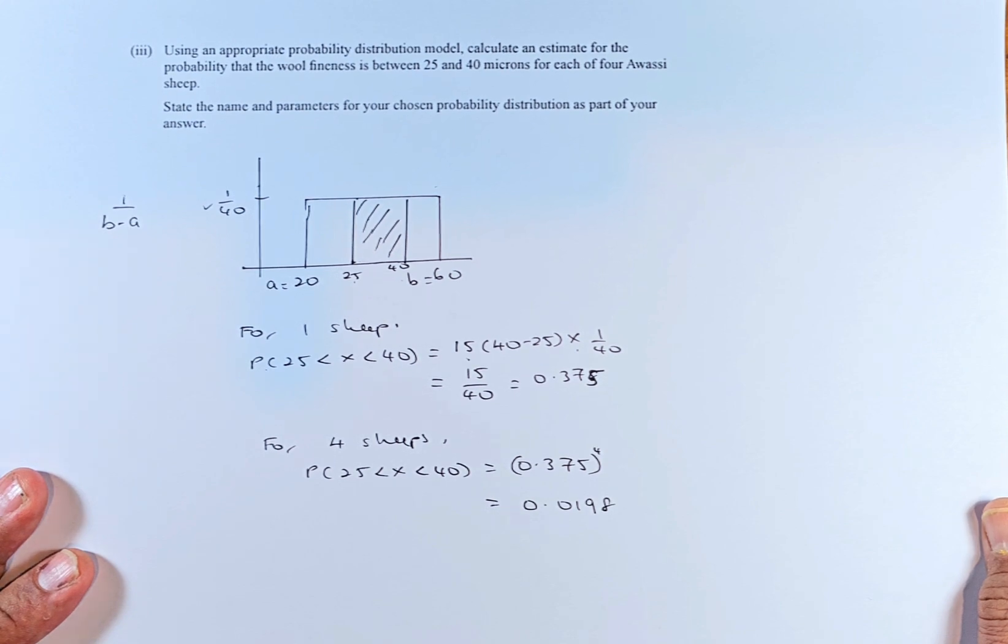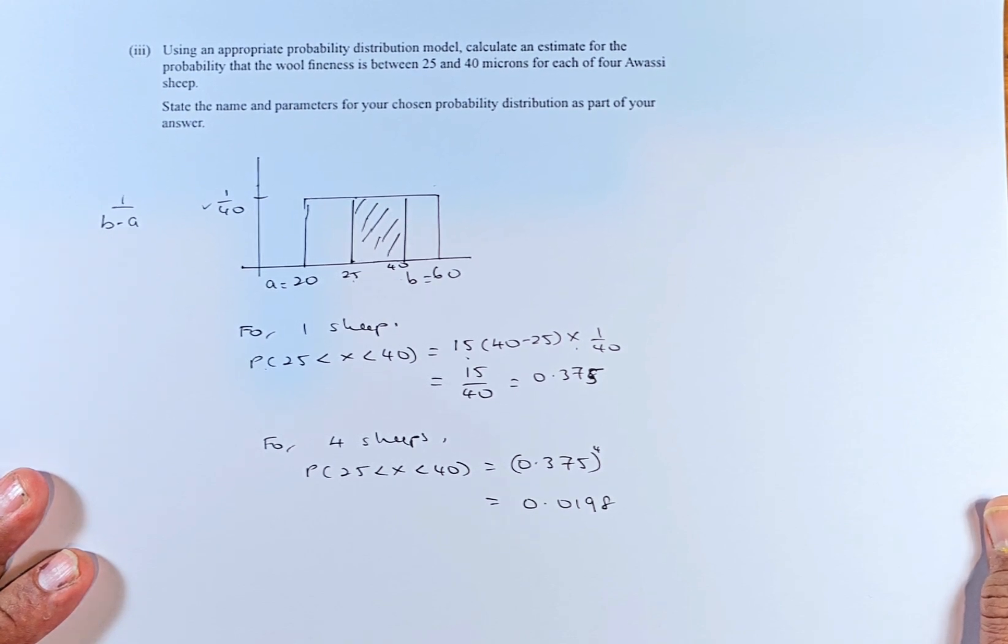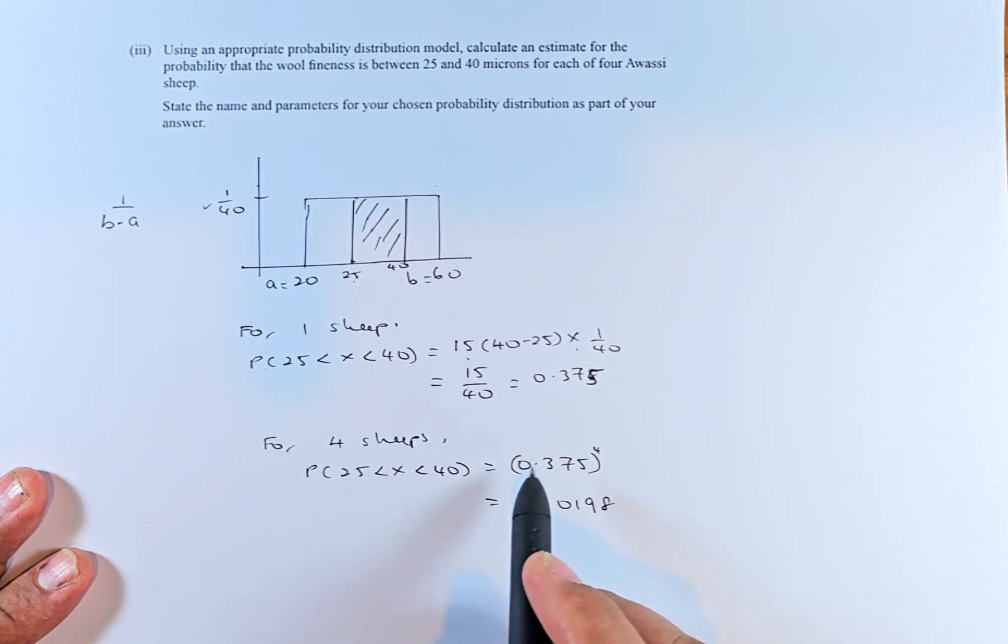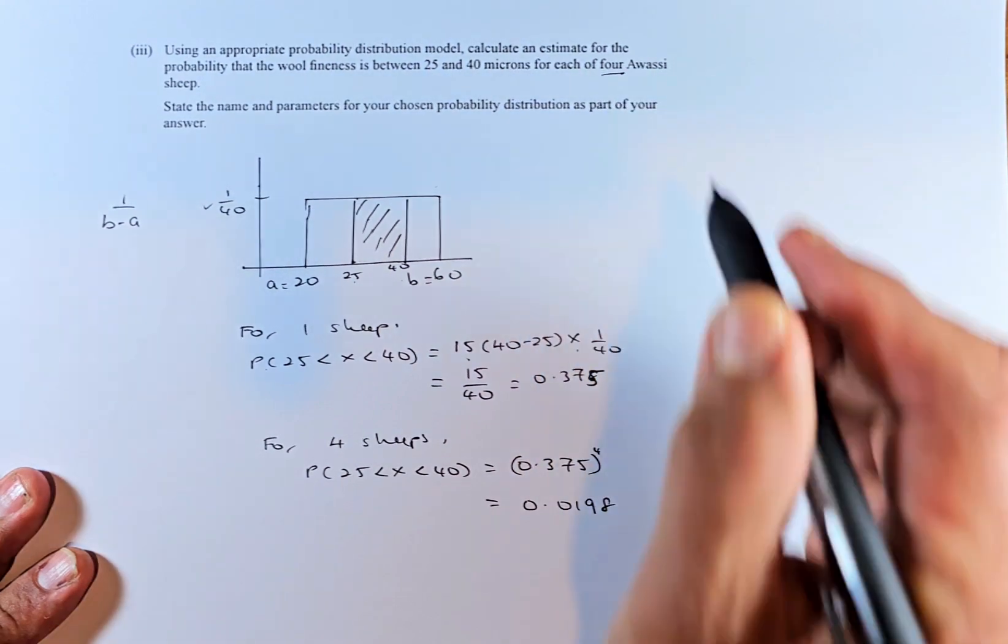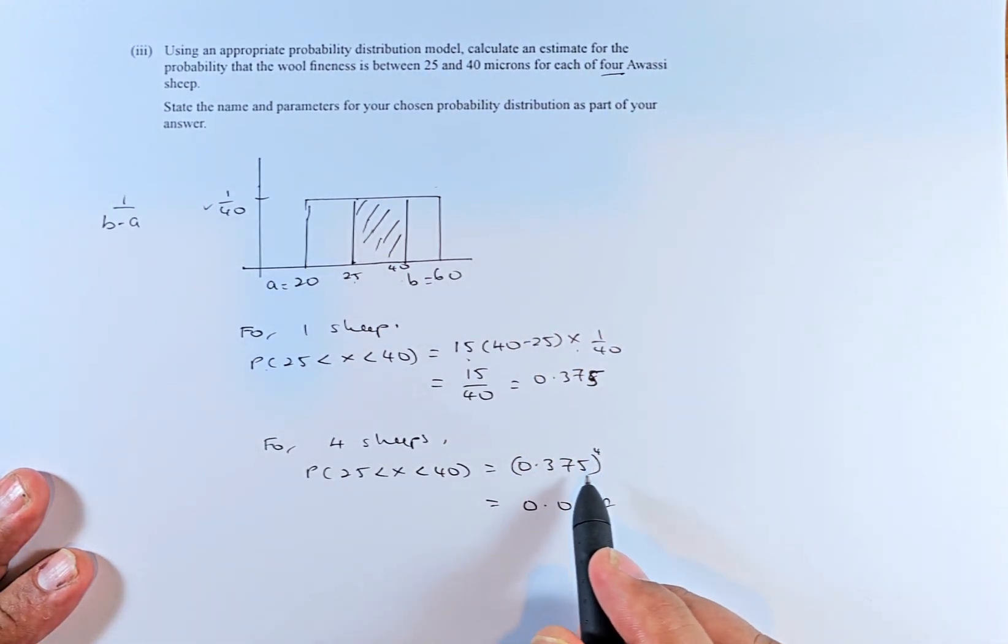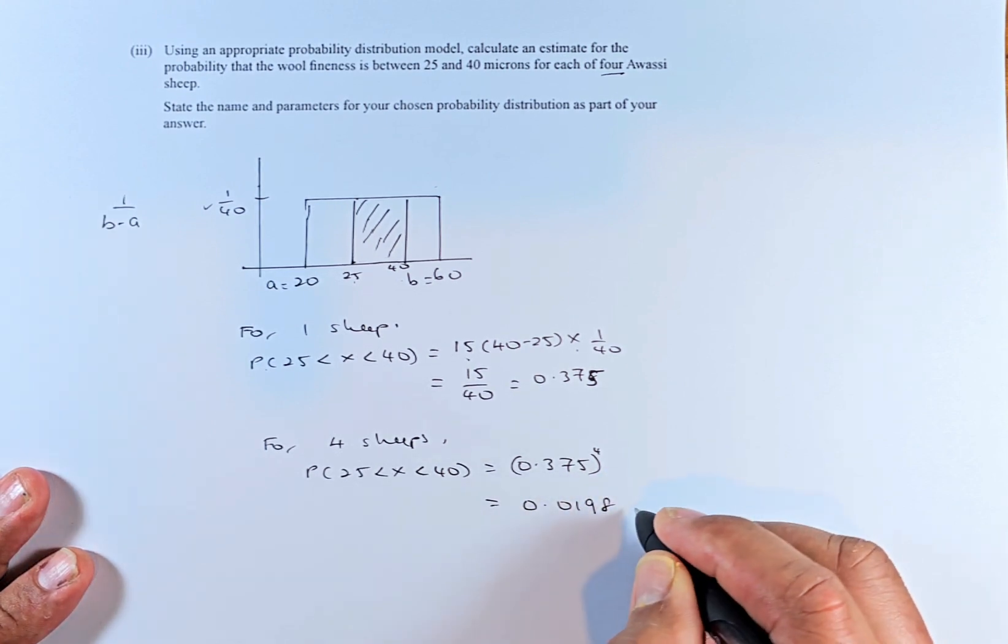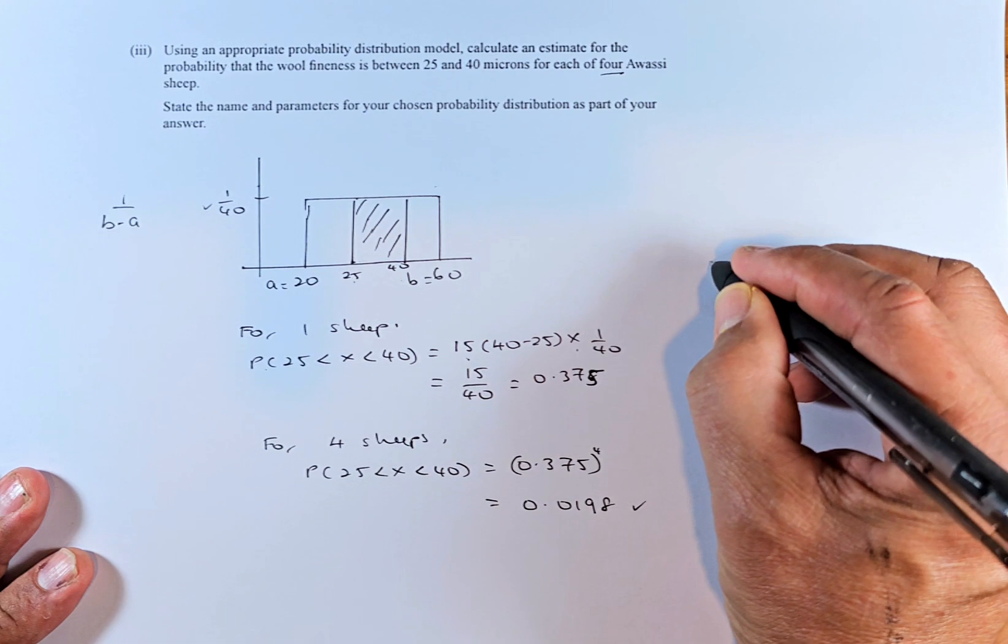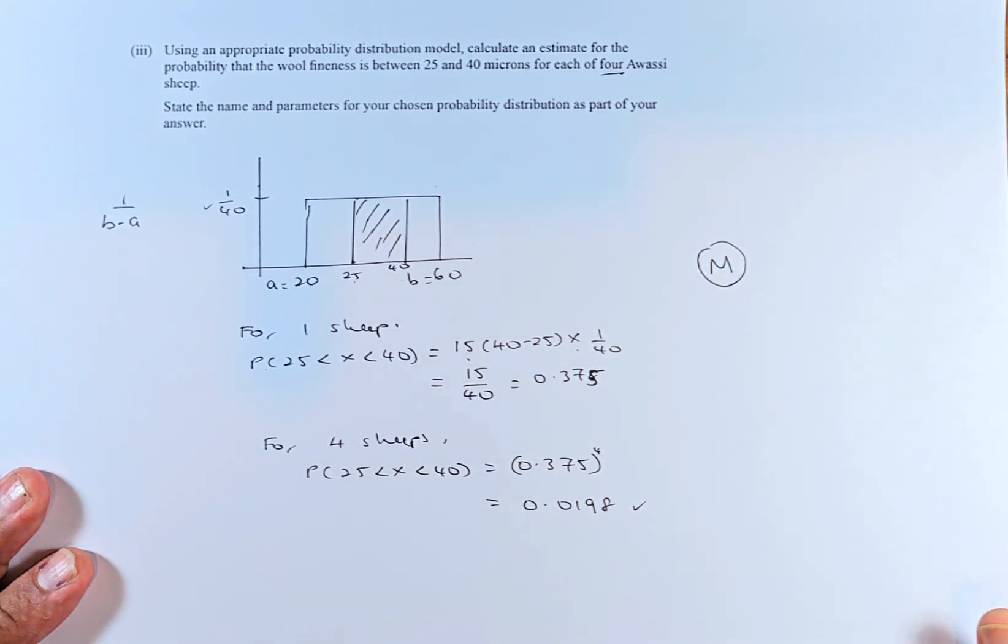But the question asks for 4 ships. So to calculate for 4 ships, we take that number 0.375. Because the question is for each of the 4 ships, it's 0.375 times 0.375, 4 times, or 0.375 to the power of 4. When you put this in your calculator, it's 0.0198. And that will give you a merit in this question.